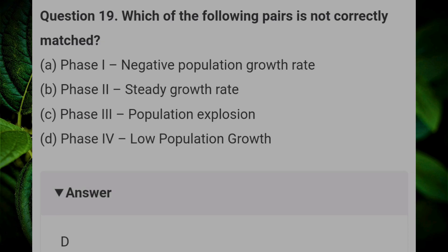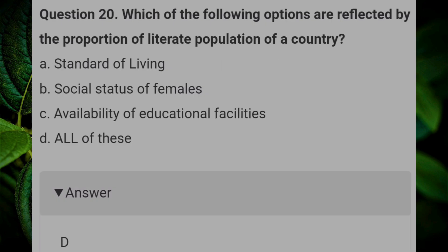Which of the following pairs is not correctly matched? Answer: D, phase 4 — low population growth. Which of the following options are reflected by the proportion of literate population of a country? Answer: D, all of these.